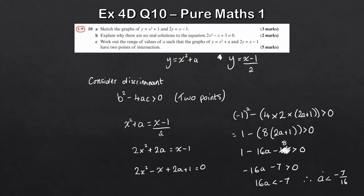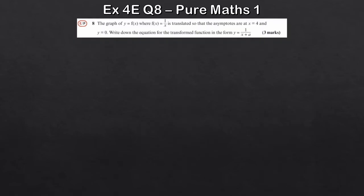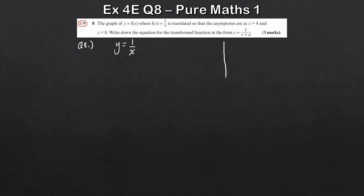Whenever you need to find a range of values for two points of intersection with graphs, the discriminant is a great method to keep in mind. The next question looks at reciprocal graphs: y=f(x) where f(x)=1/x. We're told the graph is translated so the asymptotes become x=4 and y=0, and we just have to write the equation of the transformed function.